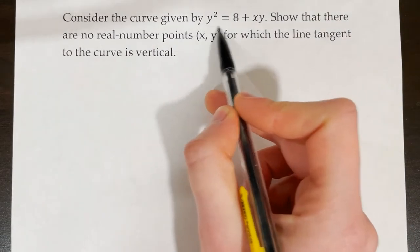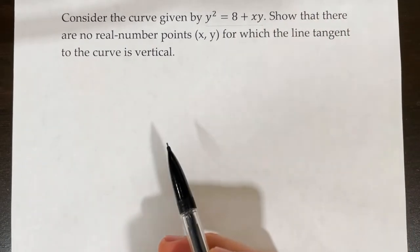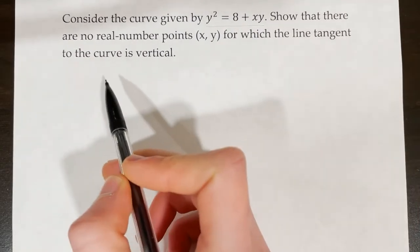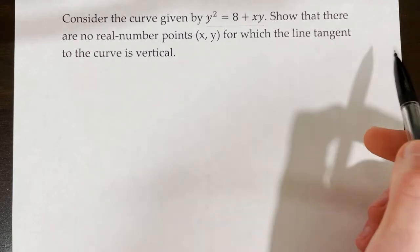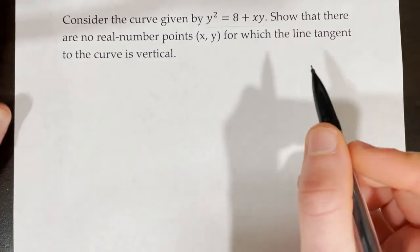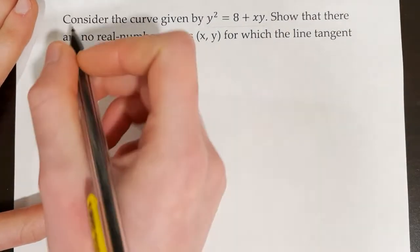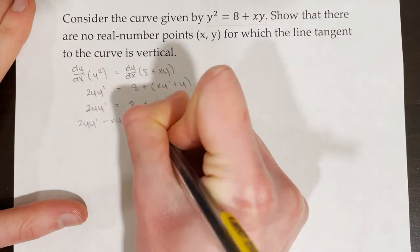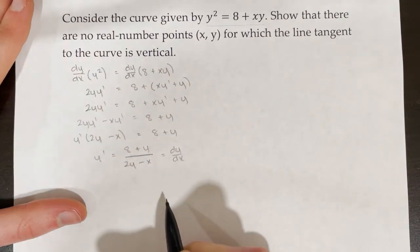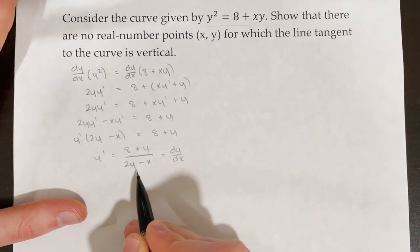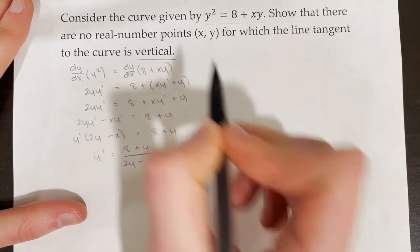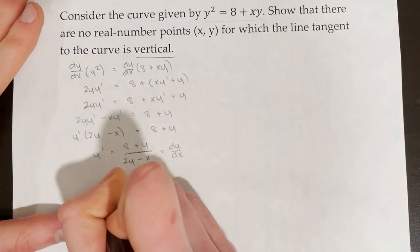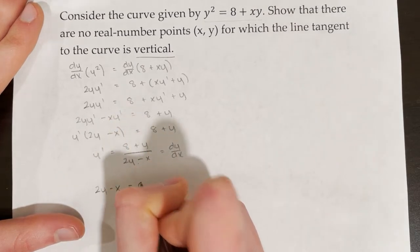Consider a final curve. Show that there are no real number points (x, y) for which the line tangent to the curve is vertical. Following the same process, I find dy/dx = (8 + y) / (2y - x). For vertical tangent lines, I set the denominator 2y - x = 0.